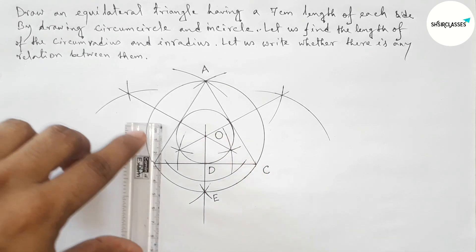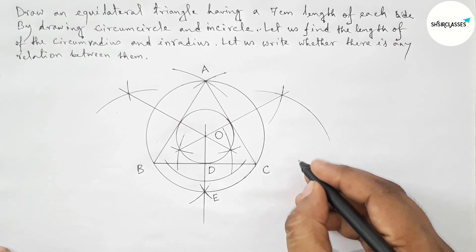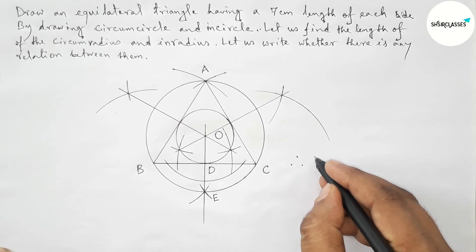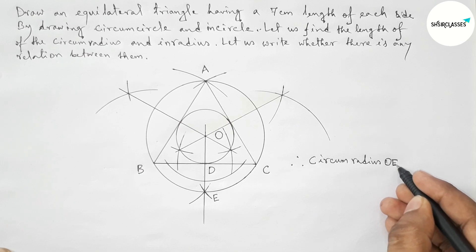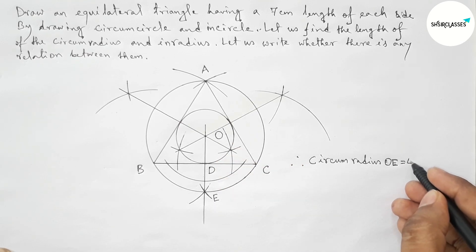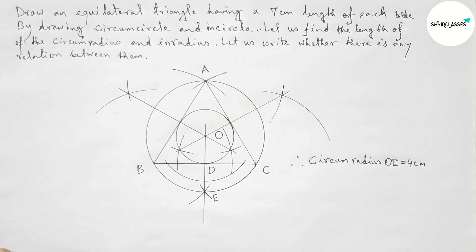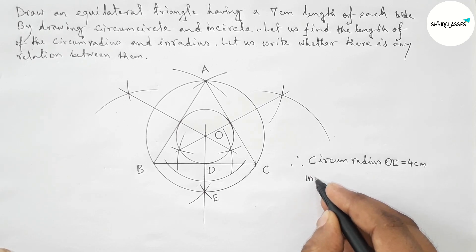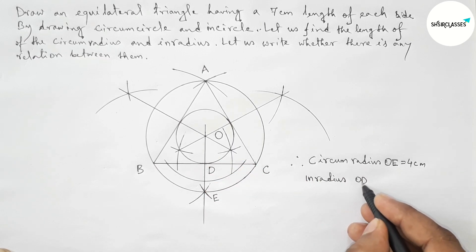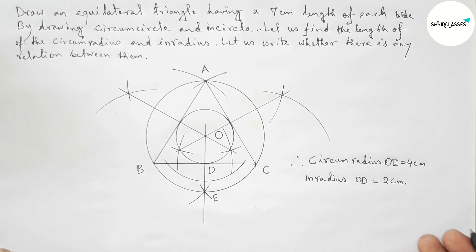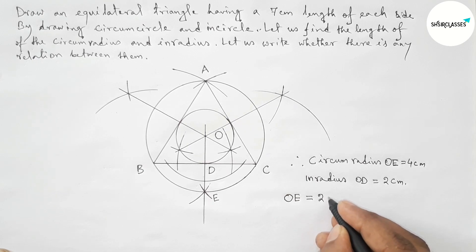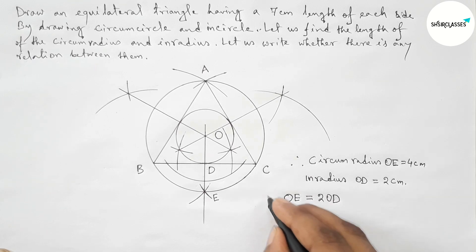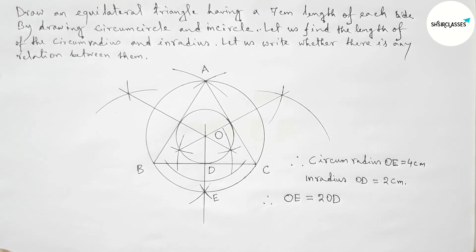Now measuring: the circumradius is 4 centimeters and the inradius is 2 centimeters. So the radius of the circumcircle equals 4 cm, and the radius of the incircle OD equals 2 cm. The relation between these two radii: the radius of the circumcircle equals two times the radius of the incircle. That's all — thanks for watching, please share it with your friends.